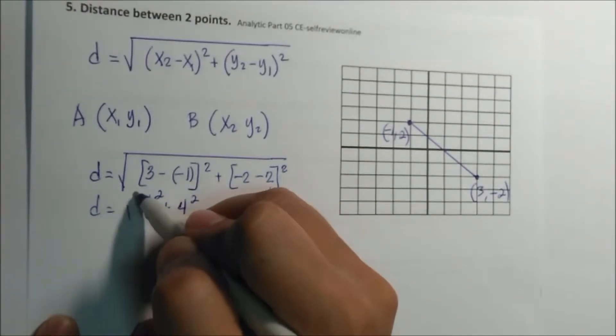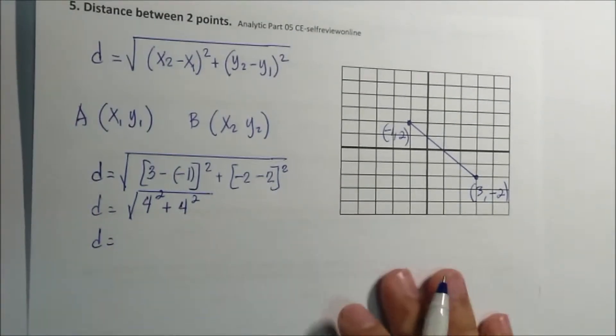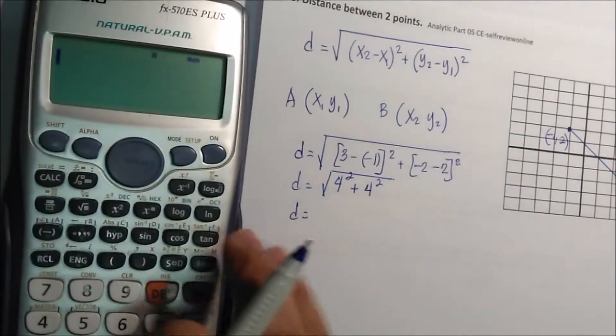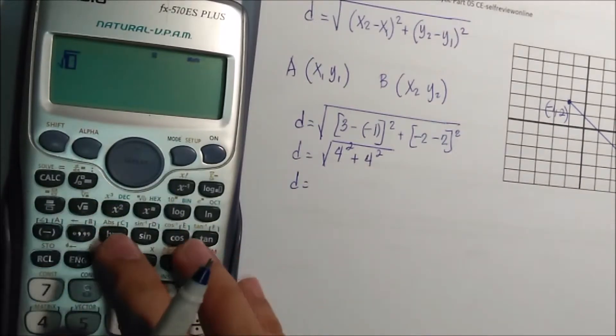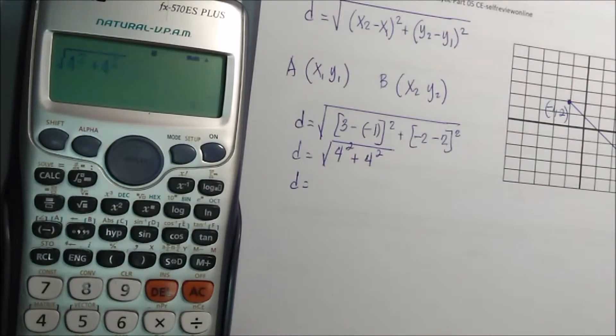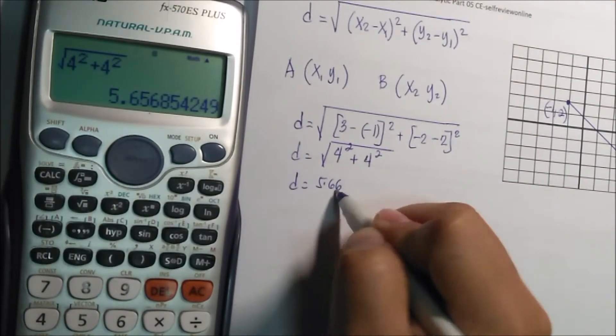So this is the square root. The distance is square root of 4 squared plus 4 squared. That is 5.66 units.